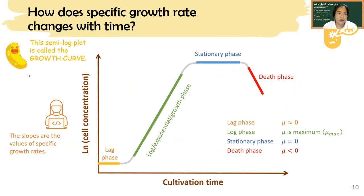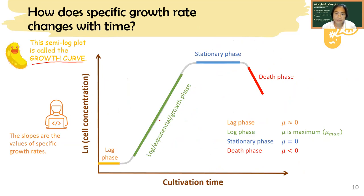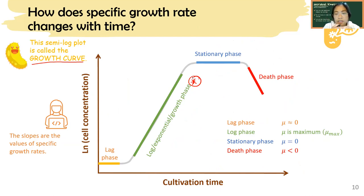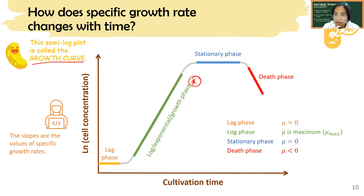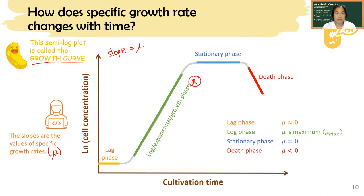This plot is the growth curve. Growth profile just tells you the concentration and time. In the growth curve and the derivation of this equation, you see that if μ is constant and you plot log x and t, you get the exponential part of the growth curve. This part is when μ is constant and at its maximum. If you plot a growth curve, which is the semi-log plot, the slope of this plot would be your specific growth rate, μ.